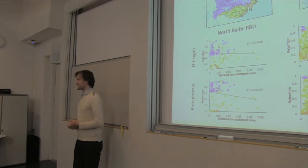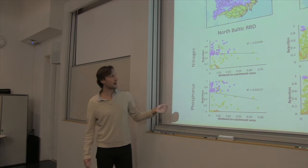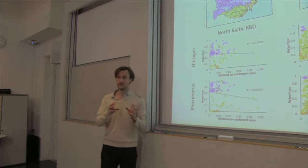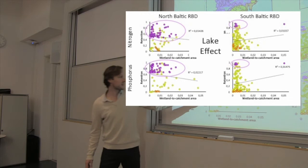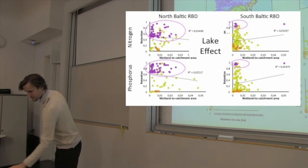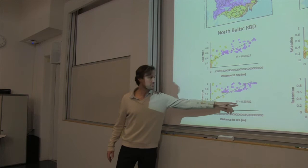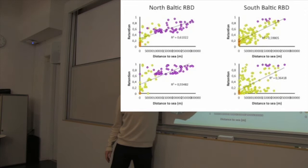And the results? This is the wetland-to-catchment area ratio, and as you can see, the R-squared is essentially nothing — no results. So we cannot see a relationship between more wetlands and more retention. But we can see a relationship between lake systems and retention: the large lakes provide more retention. We also looked at distance to the sea, and here there is a relationship with a reasonably high R-squared — the further the distance to the sea, the more retention.